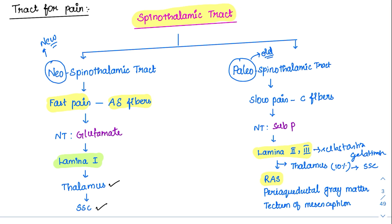The paleospinothalamic tract also goes to the periaqueductal gray matter and the tectum of the mesencephalon. These regions are essential for the supraspinal control of pain and are also responsible for the emotional aspects of pain. So the slow pain pathway goes to all these areas in addition to the thalamus.